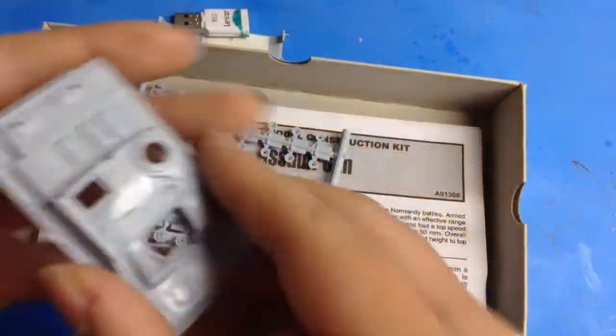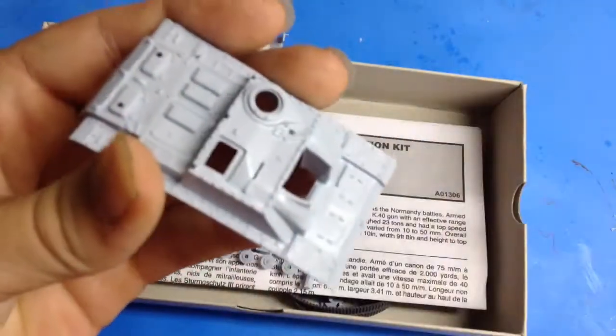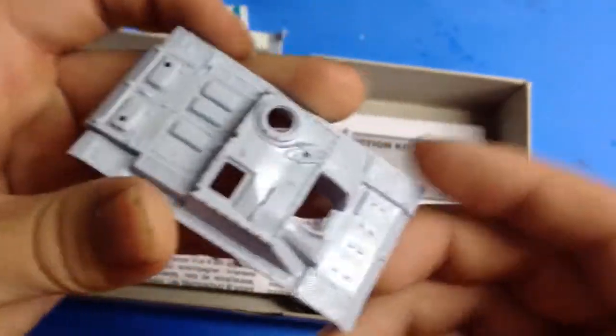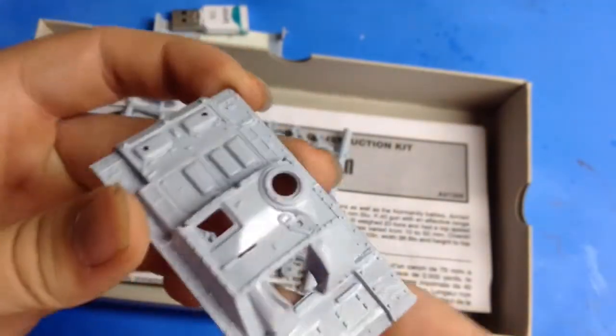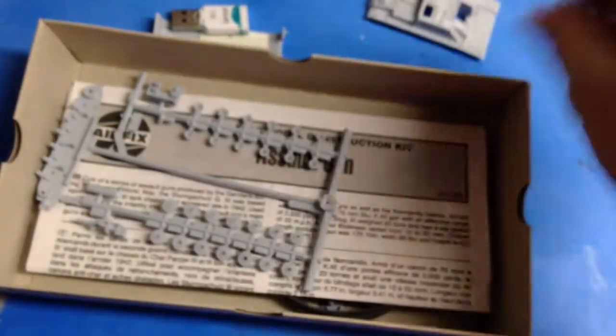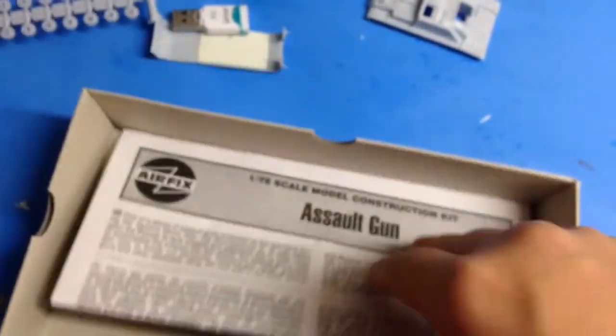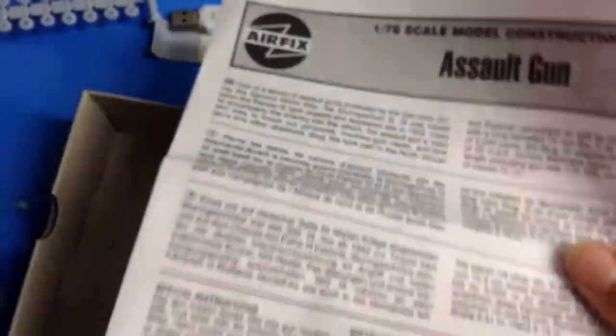Kit-wise, I'm sure you can guess, Airfix 60s. That pretty much tells you everything you know about the kit. Lots of flash, lots of huge overscale rivets. It's actually got more detail than I would have expected, which is a surprise. Instructions are very simple. I did lose the decals, but I've got a couple extras from some other 72nd scale German stuff, so that won't be a problem.